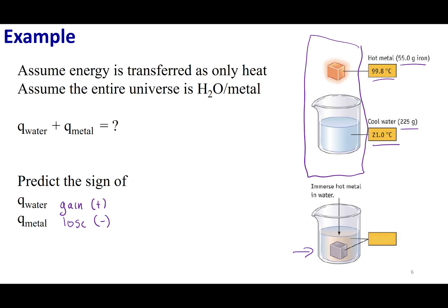The first law of thermodynamics says I can't create nor destroy energy. If my water is gaining heat and my metal is losing heat, the amount of heat my water gained has to come from the metal. The heat the metal loses has to go somewhere — and if my entire universe is these two objects, it has to go into the water. These two have opposite signs but equal magnitude.